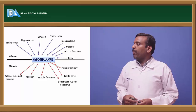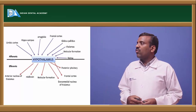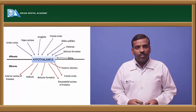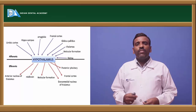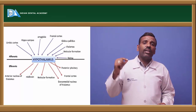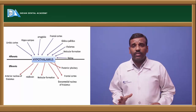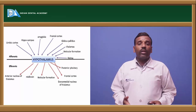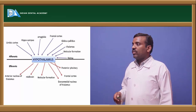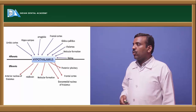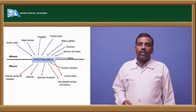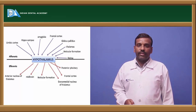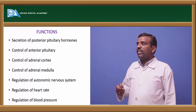Efferent connections from the hypothalamus go to the anterior nucleus of the thalamus, midbrain, reticular formation, dorsomedial nucleus of the thalamus, frontal cortex, and posterior pituitary gland.